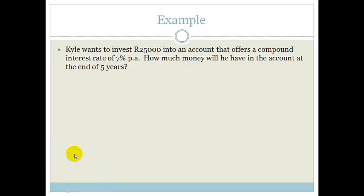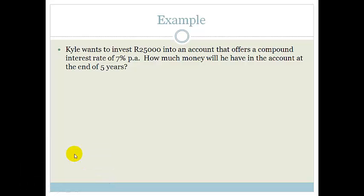This is just a straightforward compound interest calculation. So the first thing we do is write down the formula: A is equal to P times 1 plus i to the n.